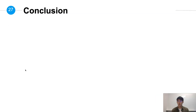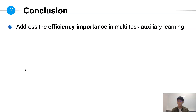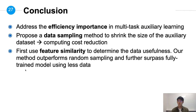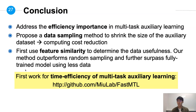Now we will conclude our work. There are three main contributions. First, we address the importance of efficiency in multitask auxiliary learning. Second, we propose a data sampling method to shrink the size of auxiliary data and successfully reduce computing cost. Third, we propose to use feature similarity to determine data usefulness, and the experiment results show the effectiveness of our method. We are able to surpass the fully trained model using less data and computing time. We are the first work focusing on the efficiency of multitask auxiliary learning. Welcome to visit our GitHub page.